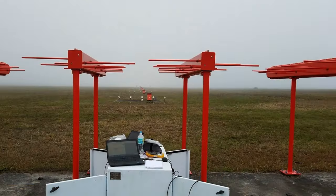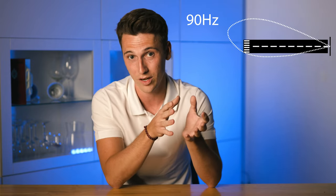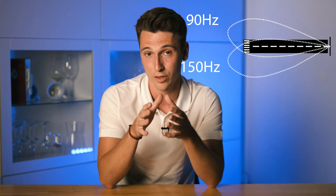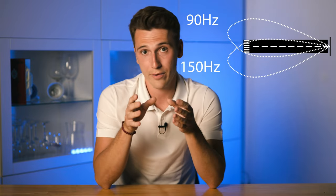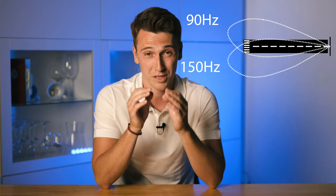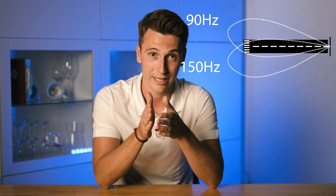The localizer antenna looks like that and is always situated at the end of the runway you're landing on. It's built up out of bi-directional antennas. These antennas send out two frequencies — one at 90 Hz to the left side and one at 150 Hz to the right side. These two signals are directed such that they intercept at a specific course to glide down on the center line of the runway.